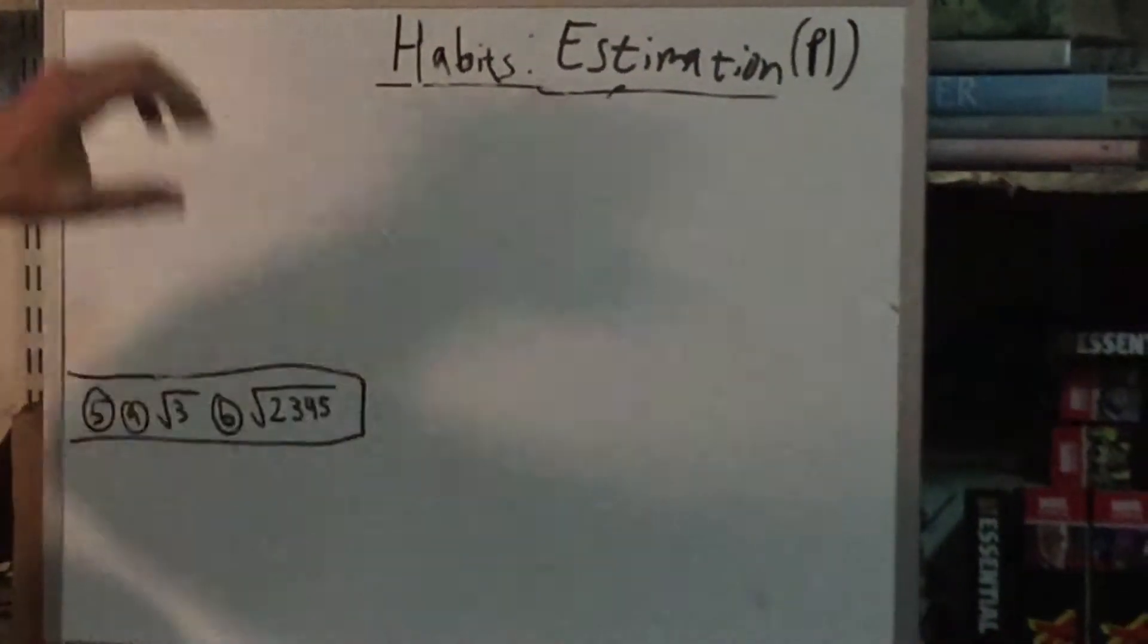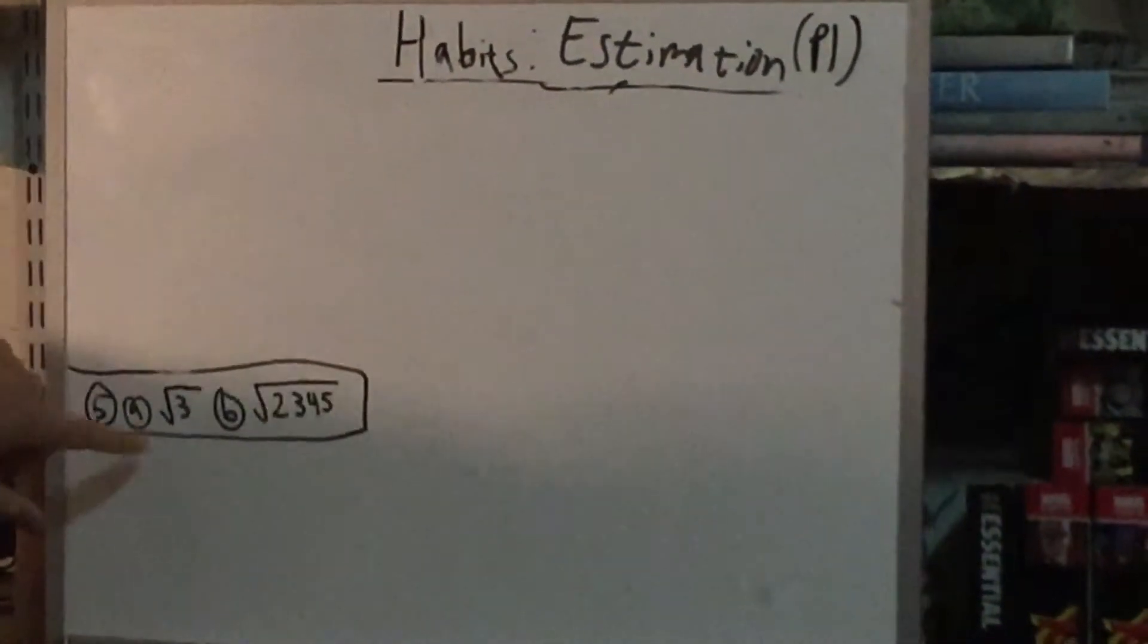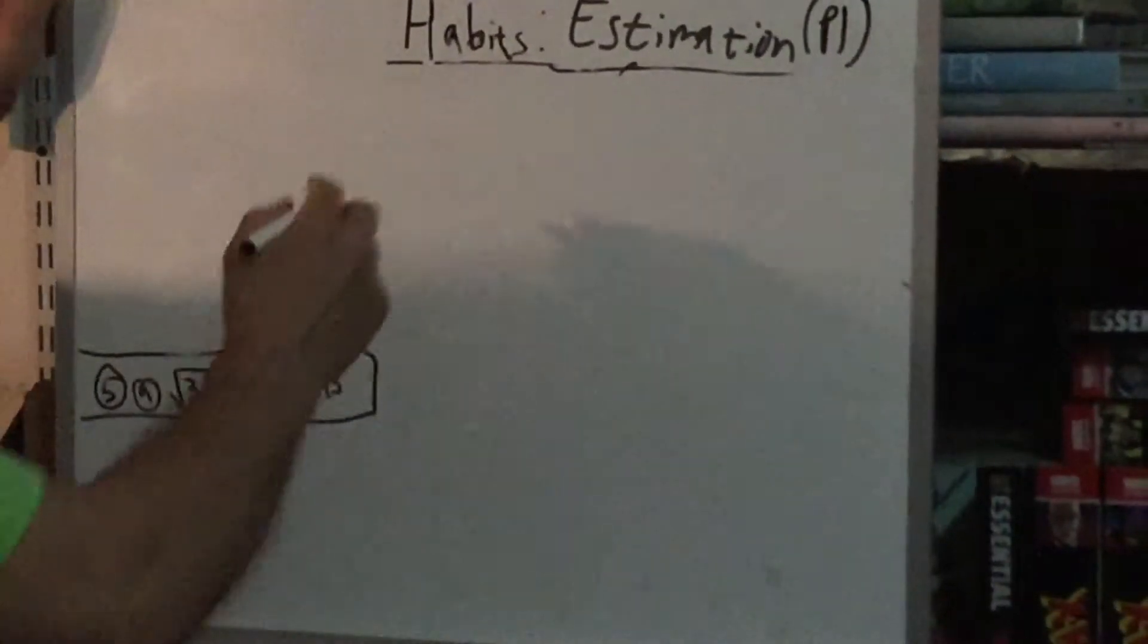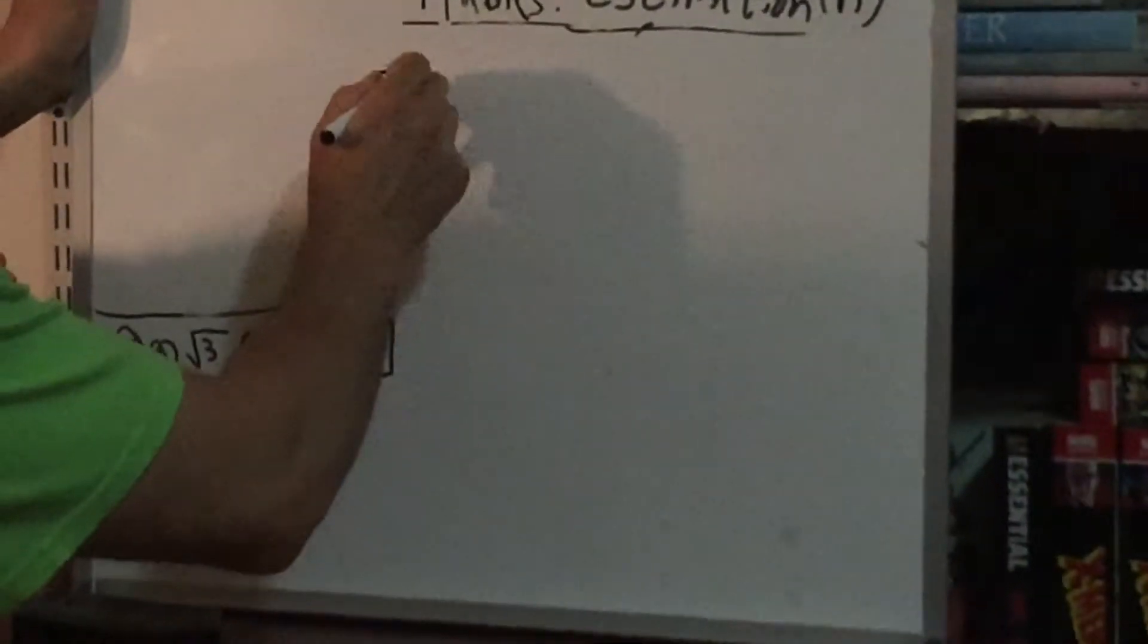In the previous video we did 1 through 4, today we're going to do number 5. So let's see how can we estimate the square root of 3.